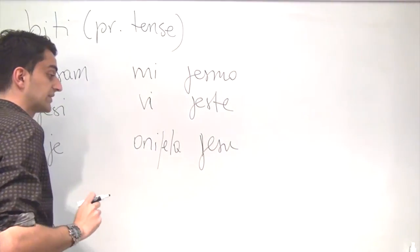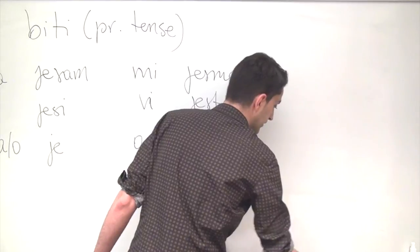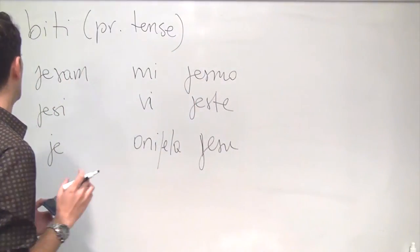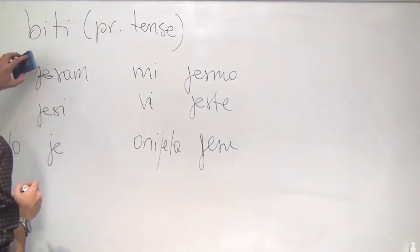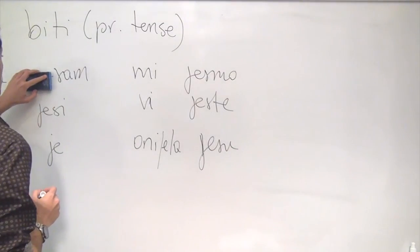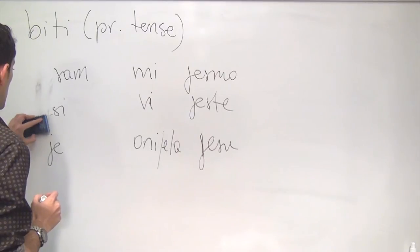Now, when I said clitic form, that means that we need to get rid of something, make it shorter. What we'll get rid of is this prefix here, je.